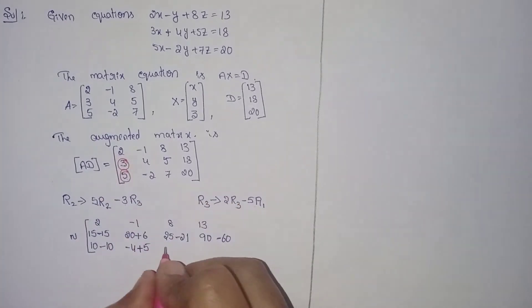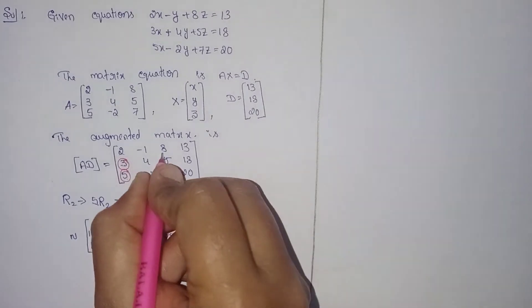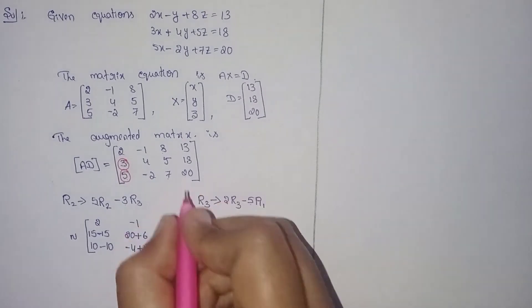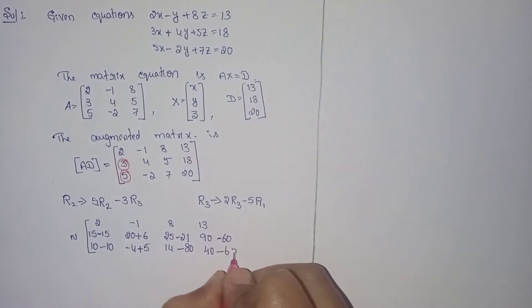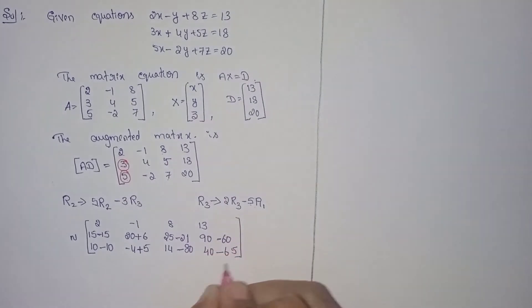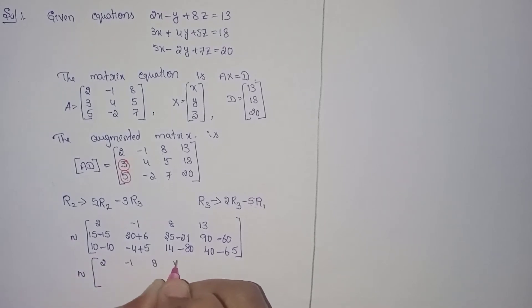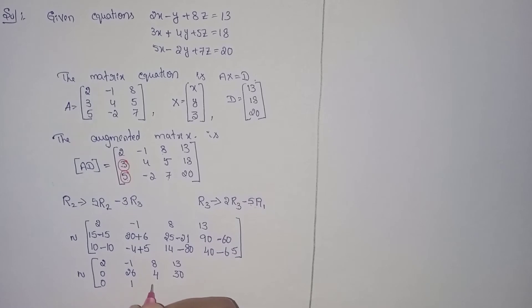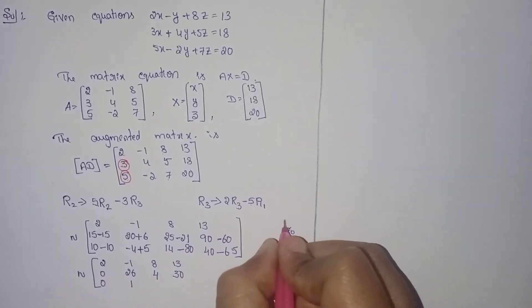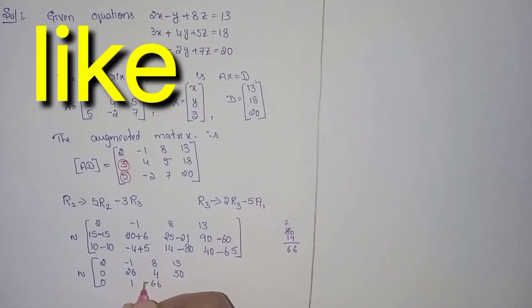After the operations the result is: 2×8 is 40, 2×20 is 40, minus 5×13 is 65. The updated augmented matrix becomes: row 1: 2, -1, 8, 13; row 2: 0, 26, 4, 30; row 3: 0, 1, -80, -14. Take borrow: 10, 6, 6, -66. Note: 2×7 is 14, 5×8 is 40, so 40-14 is 26, giving -26.